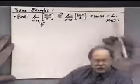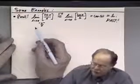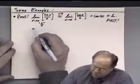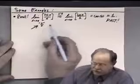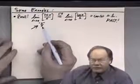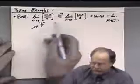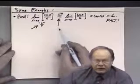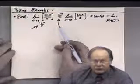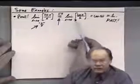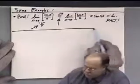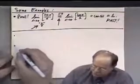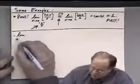As a matter of form: always indicate the indeterminate form at the beginning, and always write 'LH' over the equal sign where L'Hôpital's rule is applied, to alert the reader. Always verify you have the correct form before applying the rule — L'Hôpital's rule does not apply unless it's zero over zero or infinity over infinity.